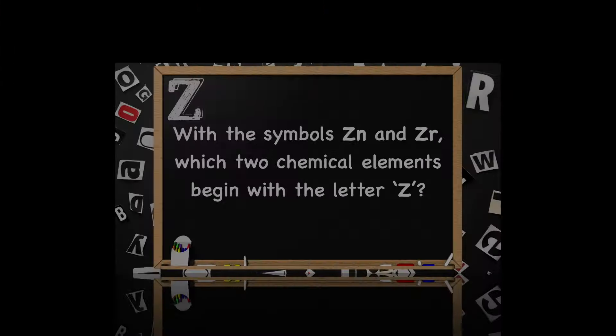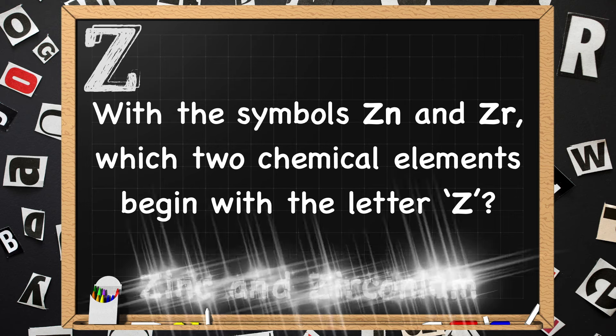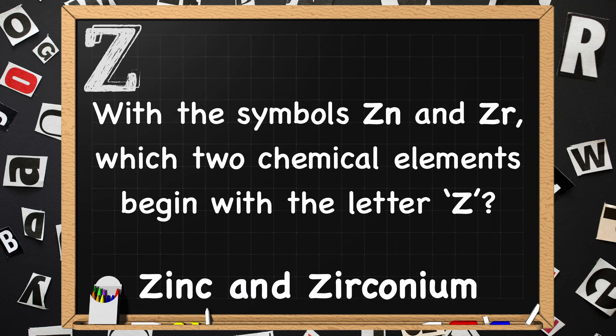Beginning with Z. With the symbols Zn and Zr, which two chemical elements begin with the letter Z? The answers are Zinc and Zirconium.